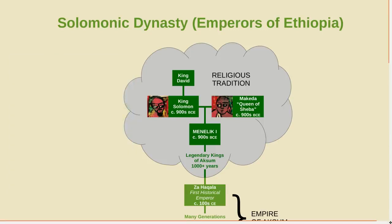One of the things that makes this dynasty so interesting is that it claims to be rooted in the very distant past. The name Solomonic comes from King Solomon, so that's where I'm going to start. Keep in mind that this first part is based on religious tradition, not verifiable history, but we'll get to history soon. When I say King Solomon, I mean the same Solomon that is a character in the Bible.